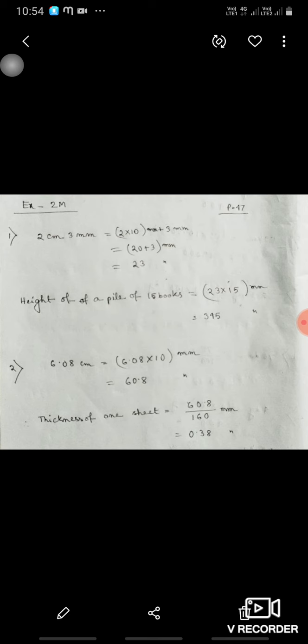6.08 into 10 means 60.8. The thickness of one sheet is 60.8 upon 160, that is 0.38 millimeter.